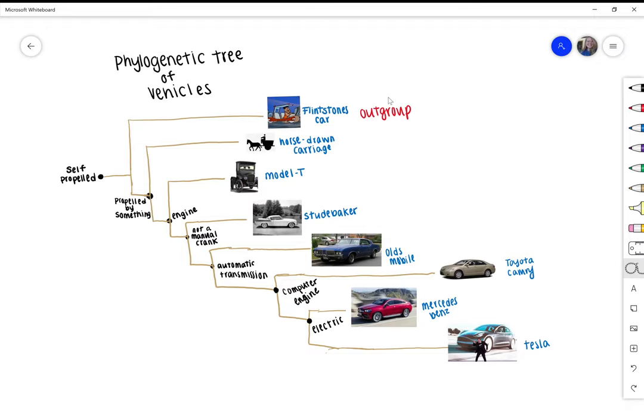Anagenesis is when one OTU evolves over time. One way we could see this would be if the Flintstones car originally evolved from a bicycle into the self-propelled car.